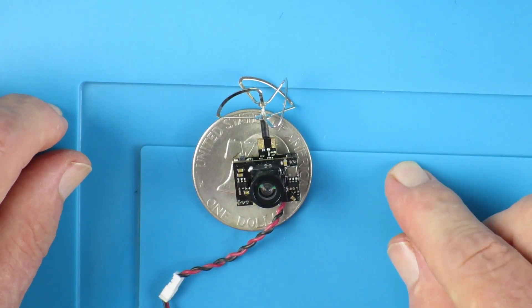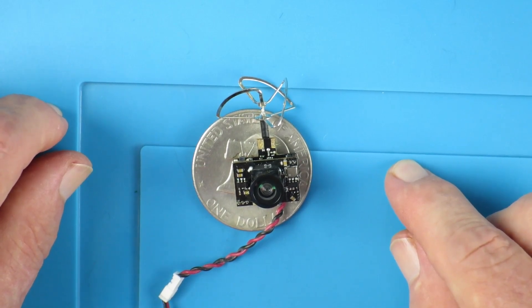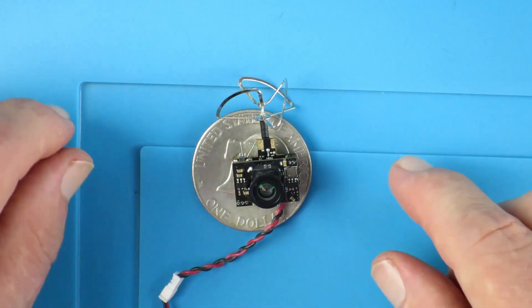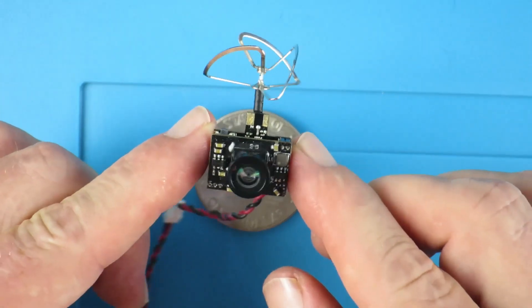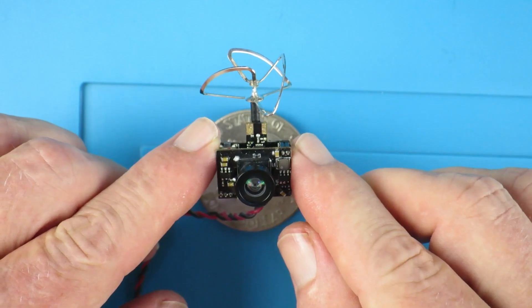It sports 40 channels, it's selectable 25, 100 or 200 milliwatts and has an output resolution of some 800 TVL in HD and it weighs less than 5 grams. Incredible! Let's take a look at it in detail.